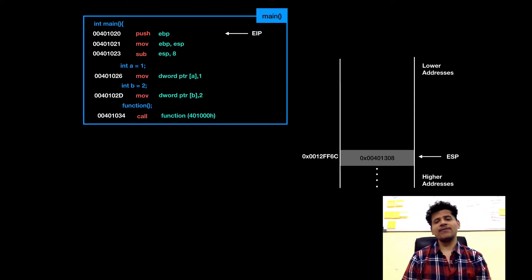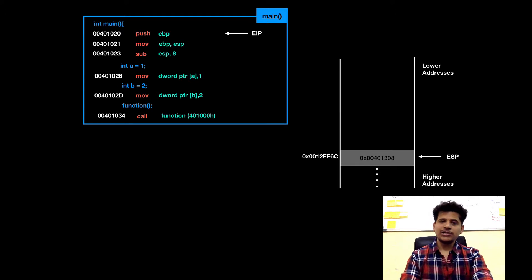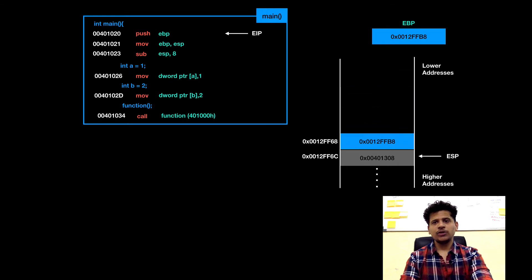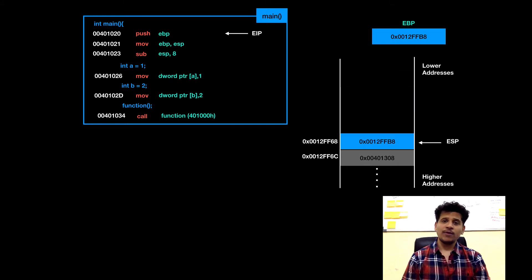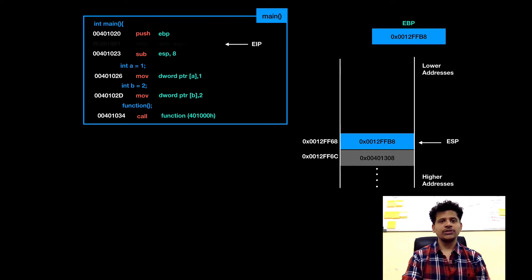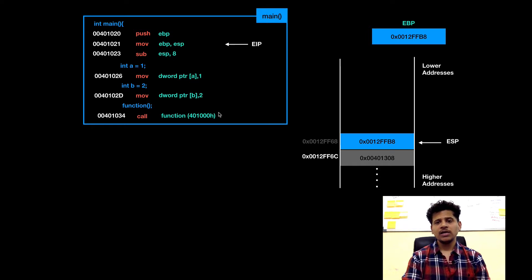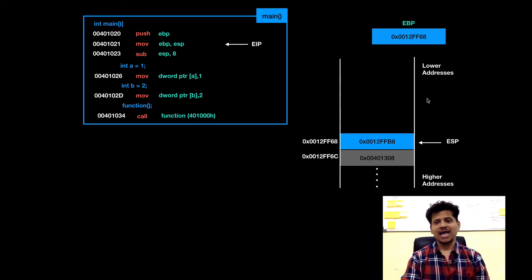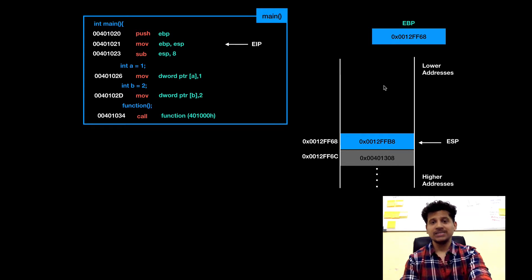We will start the execution from the main and we will see the changes in register, modification of a stack and etc. We are executing from main. First instruction is push ebp — ebp value 0012ffb8 will get pushed onto the stack. That value is the stack frame pointer of the function who called main. After that the next instruction is move esp into the ebp. That means we will move esp into the ebp to start main stack frame onto the stack. And from this address it will now be the main stack frame.